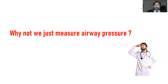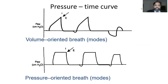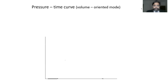Why don't we just measure airway pressure? The airway pressure is an extremely poor surrogate of the lung distending pressure. Let's look at this simple graph we see day in and day out on the ventilator — the pressure-time graph of a volume-oriented breath. Let's just break this down.